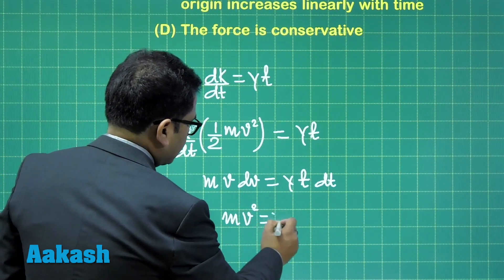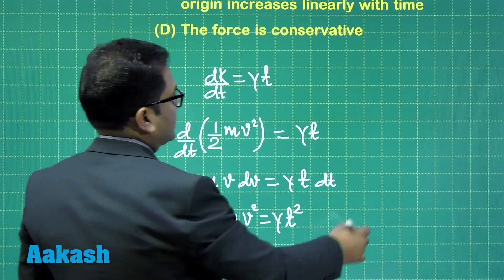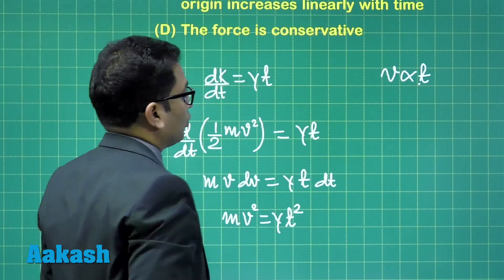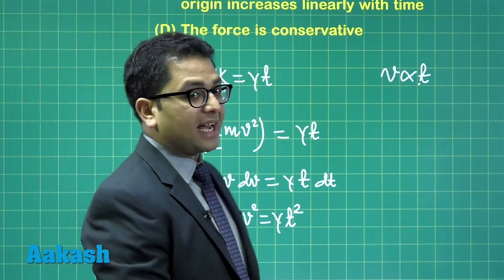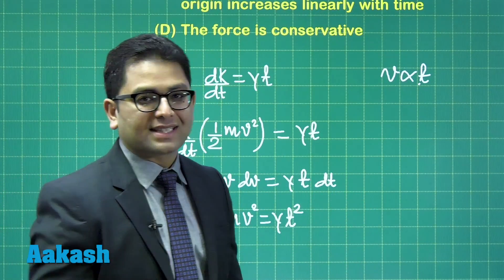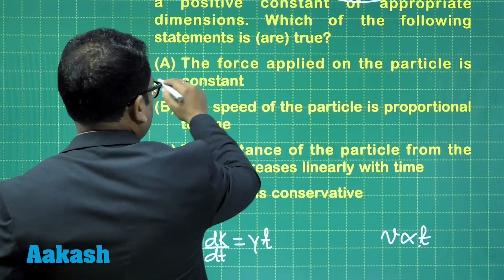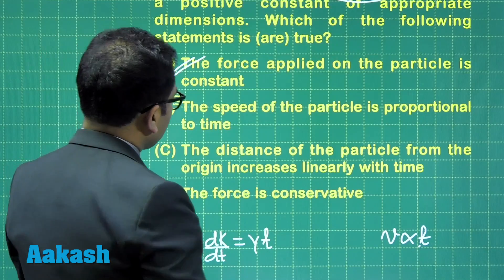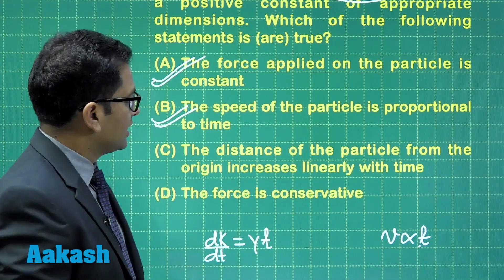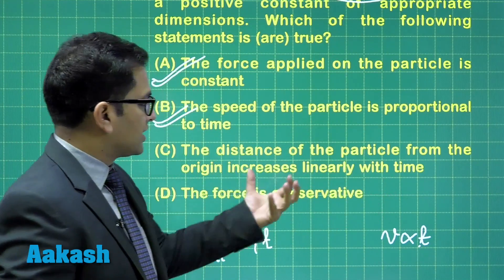And at t=0, the speed is 0. So solving this would be very simple. mv² is gamma times t². In other words, you could see that v is directly proportional to t. Well, if the speed is directly proportional to t, that means the acceleration has to be constant. And if acceleration is constant, quite obviously, the force has to be constant. By the way, the speed is proportional to time. That is quite obvious.